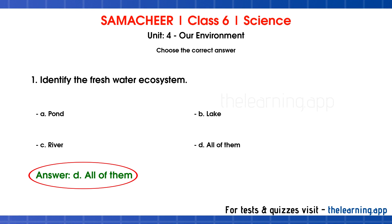Freshwater ecosystem means naturally occurring water systems. All of them — pond, lake, and river — come under freshwater ecosystems. Sea water does not come under freshwater ecosystem.